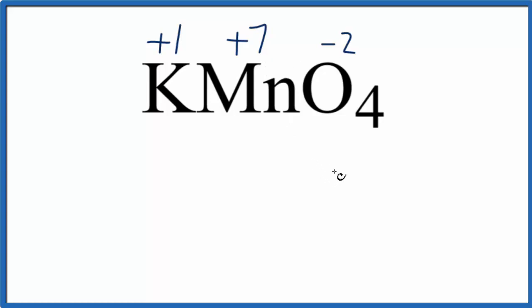You could also figure this out algebraically. We know everything is going to be zero. We know we have a plus 1 for the potassium. Manganese, let's say we don't know that. That would be x, and then 4 times minus 2, that's a minus 8. So now we could solve this expression for x.